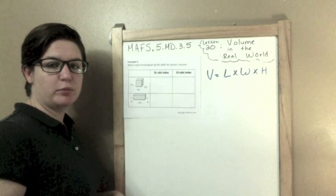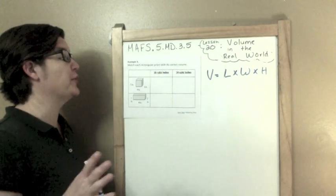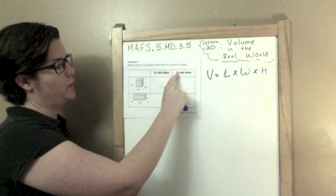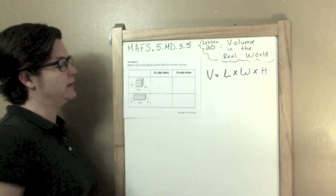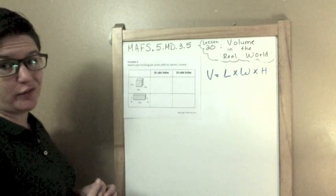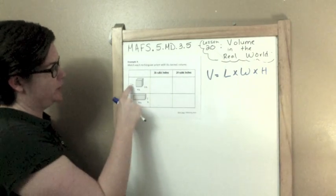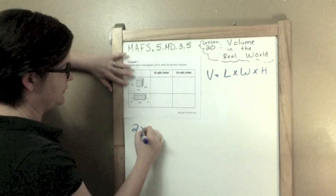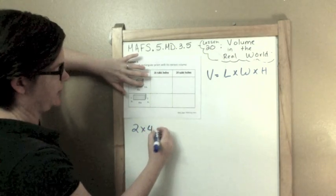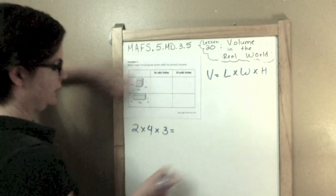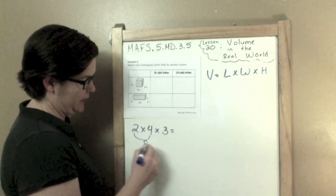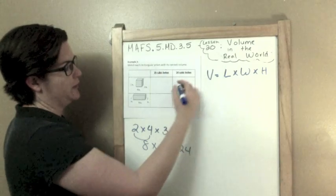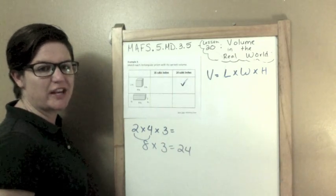Match each rectangular prism with the correct volume. So, up here it says 16 cubic inches, we have 24 cubic inches right there, and we have 2 rectangular prisms. So, what I'm going to do is solve the volume and then match it up. So, this one says the height is 2 times our length of 4 times our width of 3. So, 2 times 4 equals 8, 8 times 3 equals 24 cubic inches. So, I'll put a check right there.